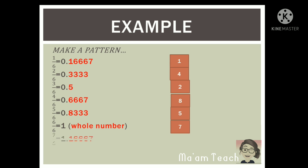Now, look at the 7th — it goes back to the decimal digit 0.1667. So if you count: 1, 2, 3, 4, 5, 6 — there are also 6 repeating decimal digits. From that, we can make a pattern: when the decimal is 0.1667, the corresponding digit is 1; when it is 0.333, the digit is 4; when 0.5, the digit is 2; when 0.667, the digit is 8; when 0.833, the digit is 5; and when it is a whole number with no decimal, the digit is 7. That's the pattern.